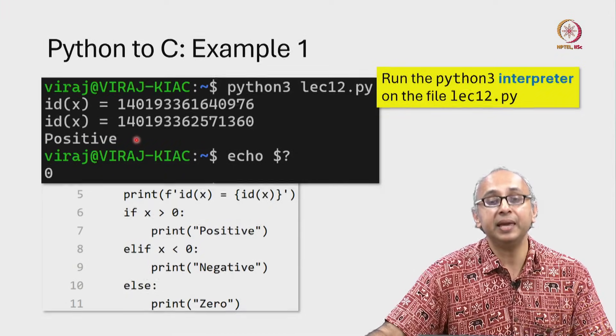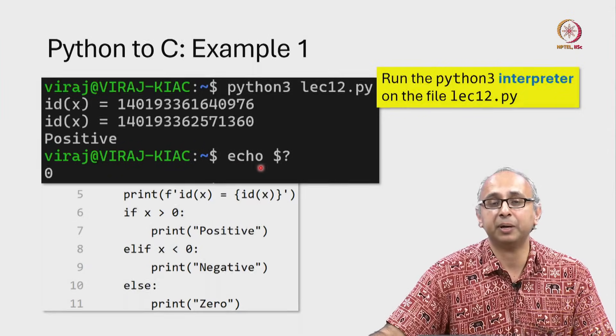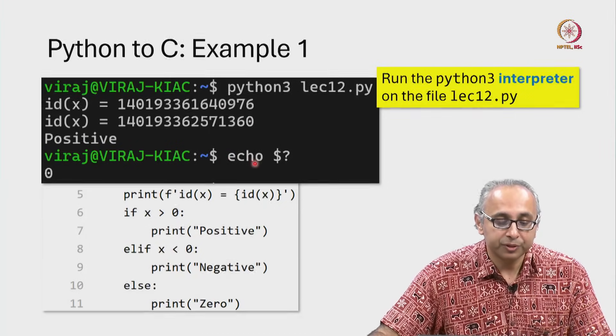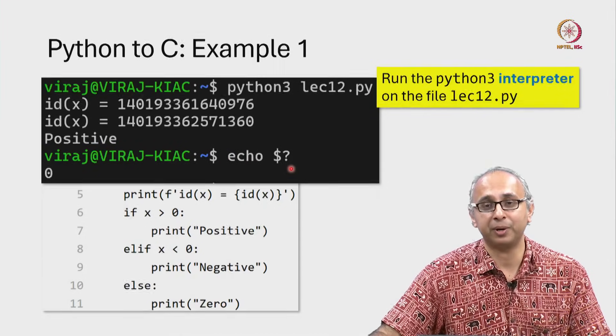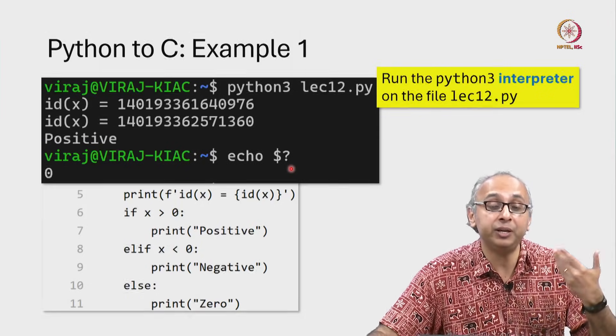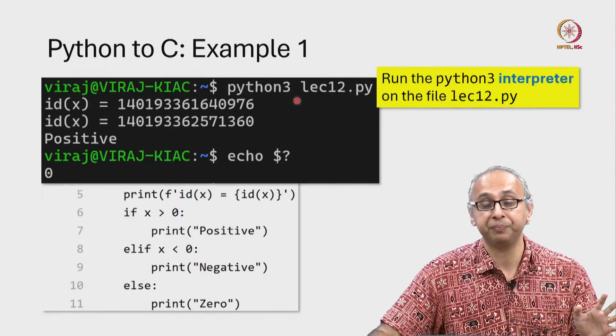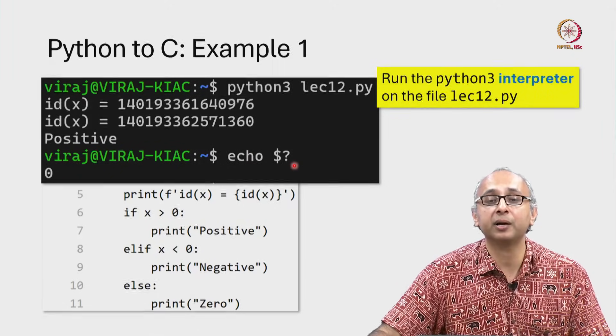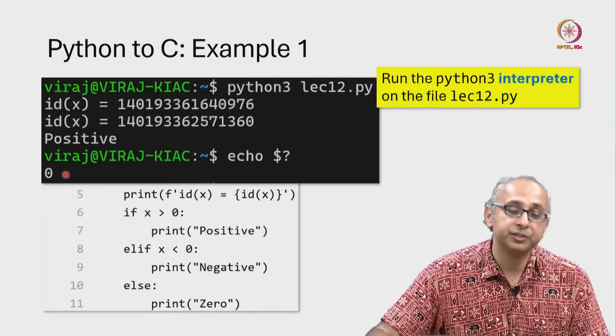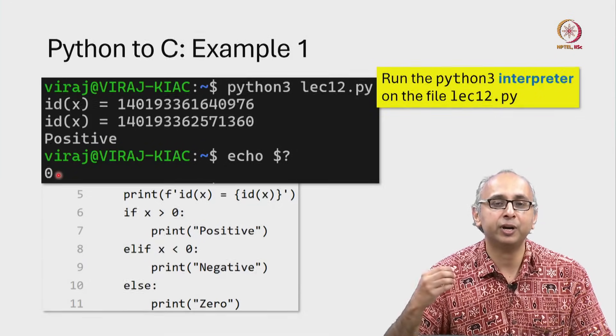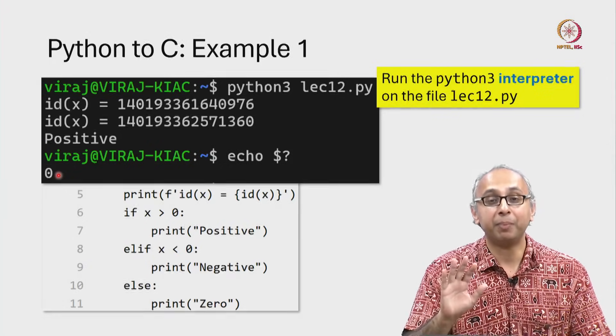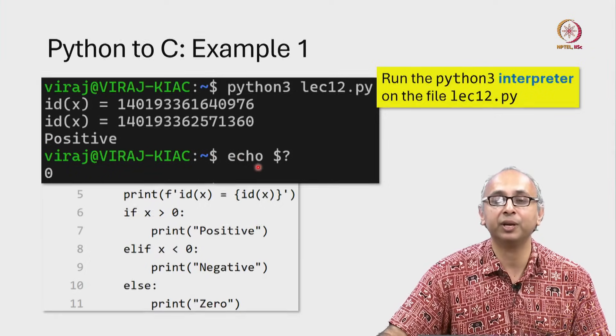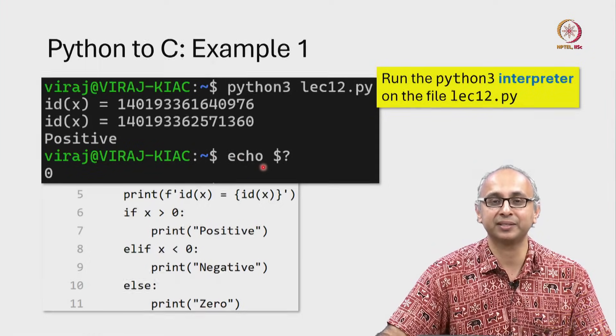After the program has executed, I am giving another command. This is a command that you can execute from the Linux terminal. Now, this next command, echo $?, is asking if the previous command caused any error. If the previous command did not cause any error, then this echo $? will print the answer 0. So keep that in mind that if a program runs successfully, by default, it returns the value 0 and you can check that by issuing this command at least on a Linux operating system.